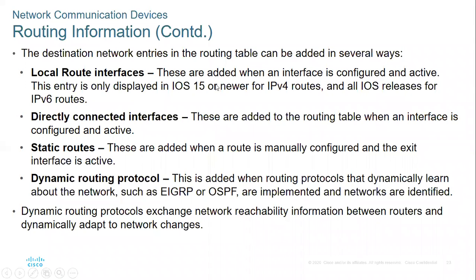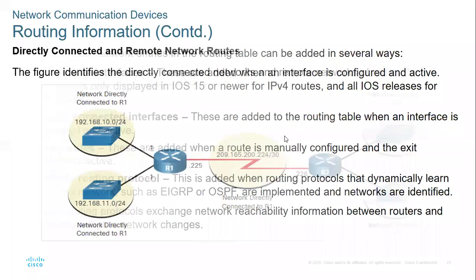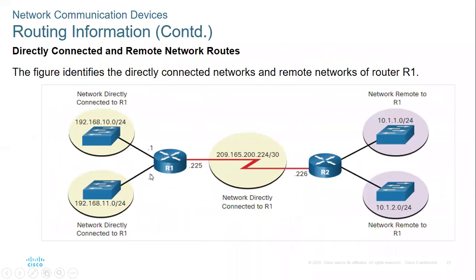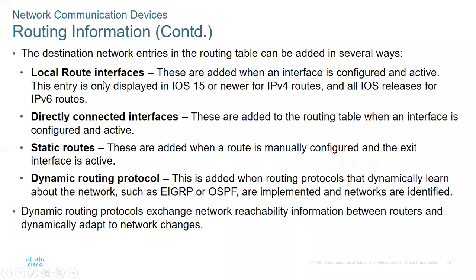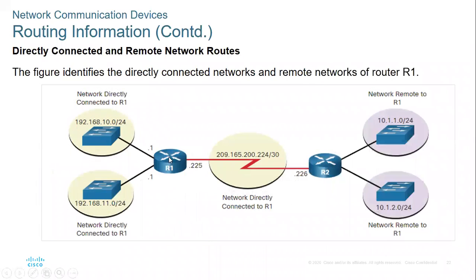We have local router interfaces — these are added when an interface is configured and active. The network associated with an interface is called a directly connected interface. For example, 192.168.10.0 is called a directly connected network, while the specific interface IP 192.168.10.1 is called a local route.